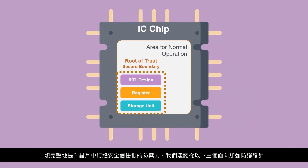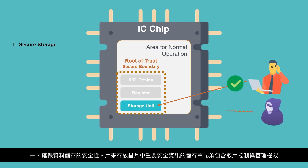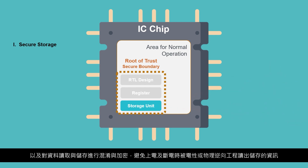To fully enhance the defensive protection of the hardware root of trust, a system must have the following three components. First, Secure Storage: the storage unit for important security information on the chip must include access control and a privileged management design. The storage unit also needs to obfuscate and encrypt data read and stored to prevent electrical or physical reverse engineering during power-on and power-off operations.